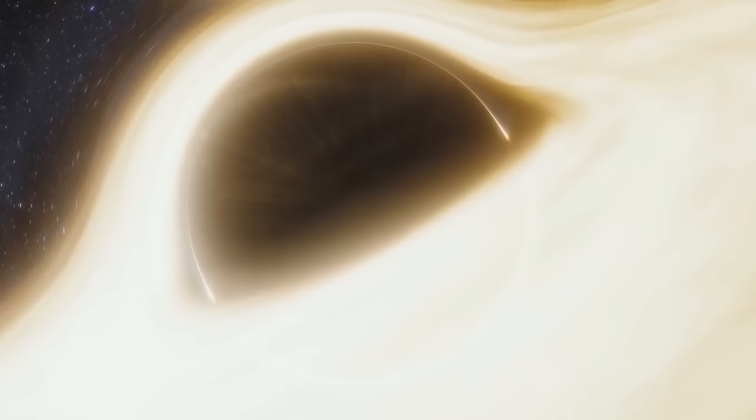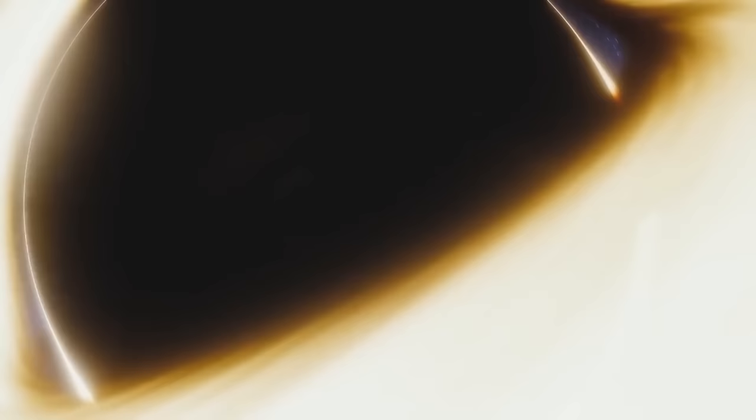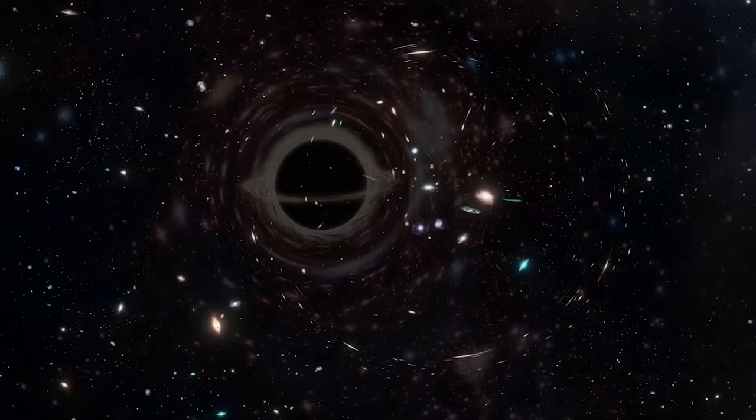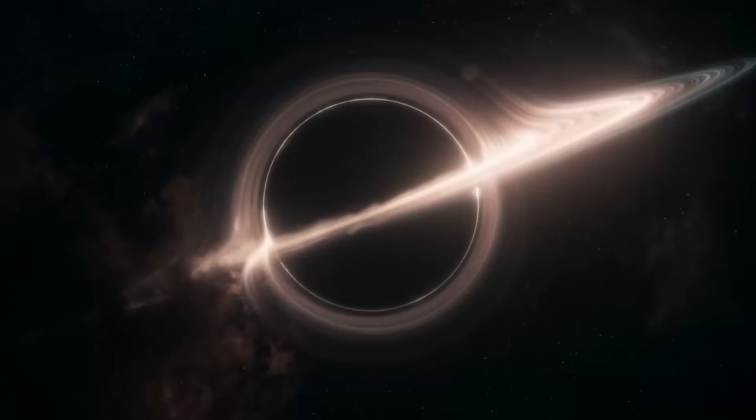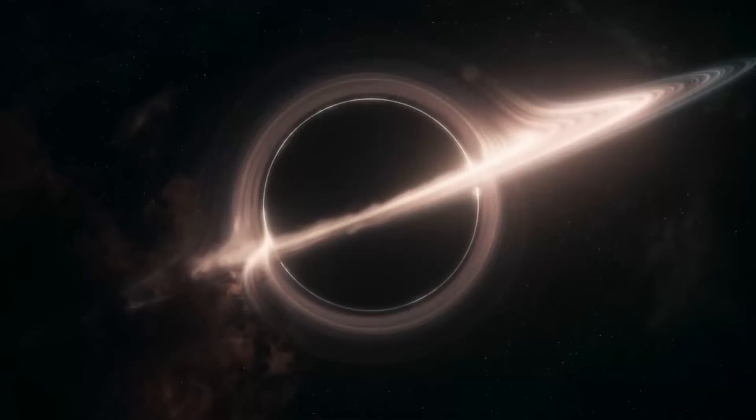On the other hand, black hole hunters focus their attention on binary systems. Although these objects are extremely discreet, they could well be much more numerous than one would think. They are convinced that this small black hole called Unicorn could be the first of many and estimate that between 100 and 1,000 could be detected in our own galaxy alone.